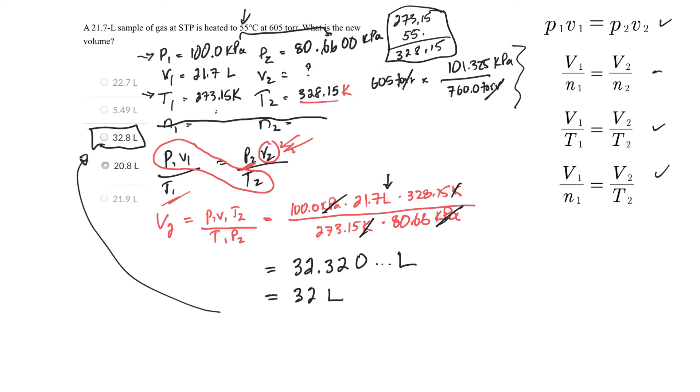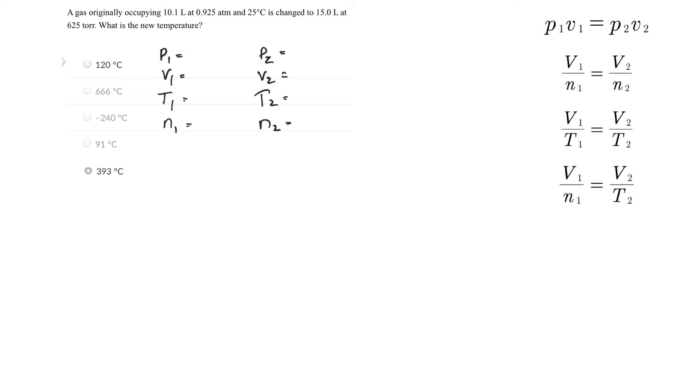Okay, here's another question that we can try. Gas originally occupies 10.1 liters, so volume 10.1 liters at 0.925 atmospheres and 25 degrees Celsius. So that's 298.15 Kelvin. It's changed to 15 liters at 625 torr. Well, what's with that again?